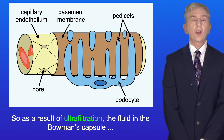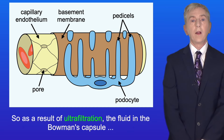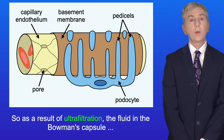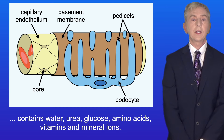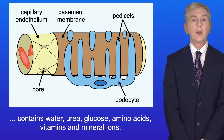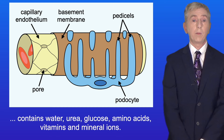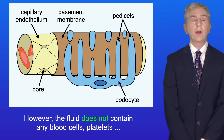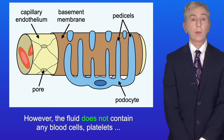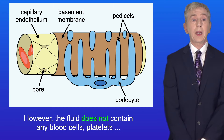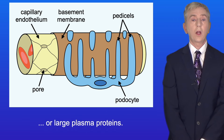As a result of ultrafiltration, the fluid in the Bowman's capsule contains water, urea, glucose, amino acids, vitamins and mineral ions. However, the fluid does not contain any blood cells, platelets or large plasma proteins.